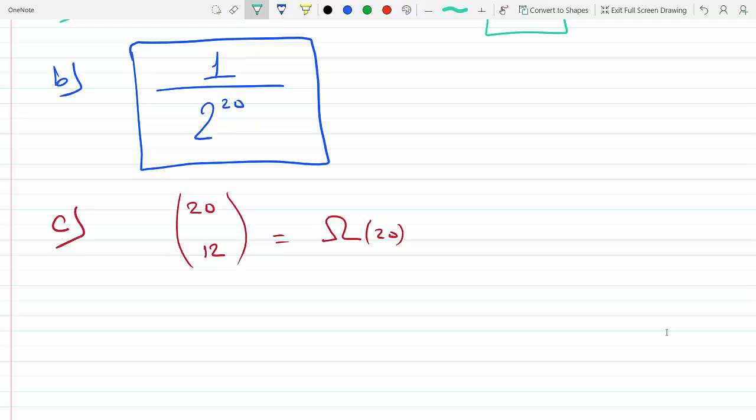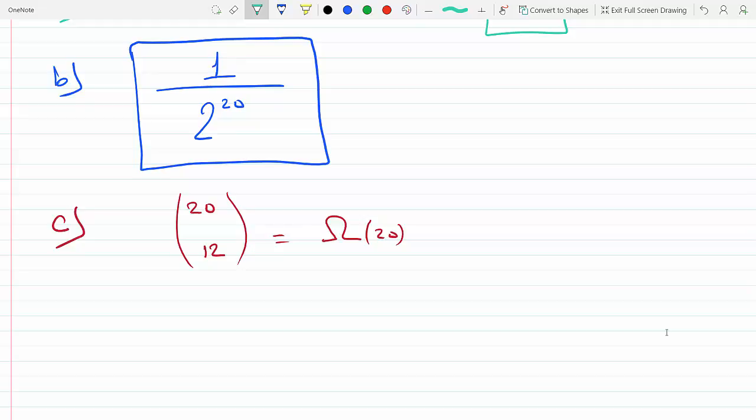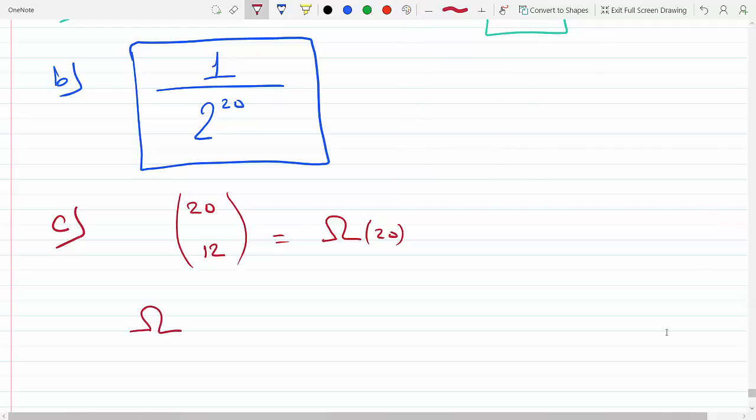So this is gonna be 20—so this is the multiplicity of getting, sorry, 12 heads will be a 20 factorial divided by (20 minus 12) factorial times 12 factorial.